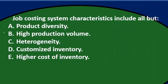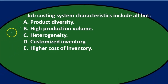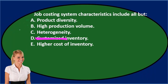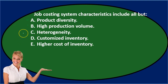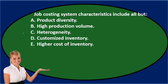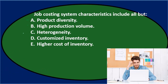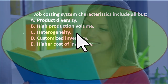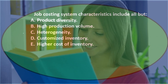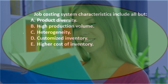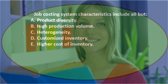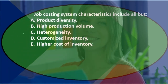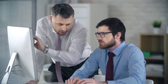Option C, heterogeneity — that means difference, meaning they're going to have different types of characteristics within the inventory. We might see this contrasted to homogeneity, which means the same. Heterogeneity means products are different in nature, and that's typically going to be the case for a job cost system, because we're going to have different types of inventory.